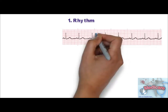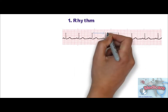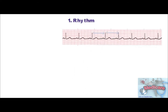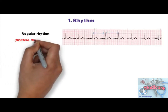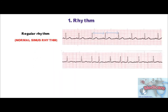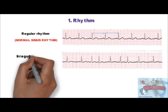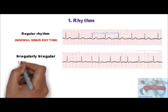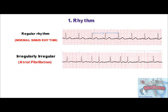To check the rhythm, we check the RR interval. As in this ECG, RR intervals are equal and there is a P-Wave before every QRS complex, so this is a normal sinus rhythm. In this second ECG, the RR interval is not equal at any time and there is no identifiable P-Wave. The rhythm is irregularly irregular, which occurs most commonly in atrial fibrillation.